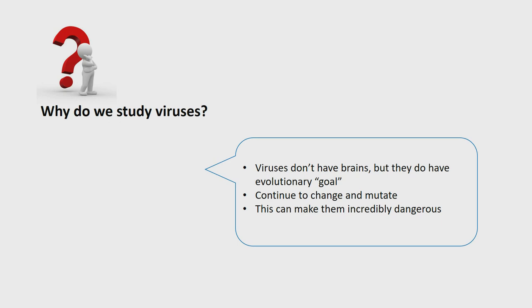Why do we need to study viruses? Viruses don't have a brain, but they have an evolutionary goal — they want to spread their genome to as many cells as possible. During the course of spreading, their genome tends to change due to mutations, and again and again new variants come into the picture. This change is very dangerous from a health point of view, because once a new variant emerges, both already immunized and non-immunized populations come at risk. Detecting a new variant is very important so we can predict the possible new peak.